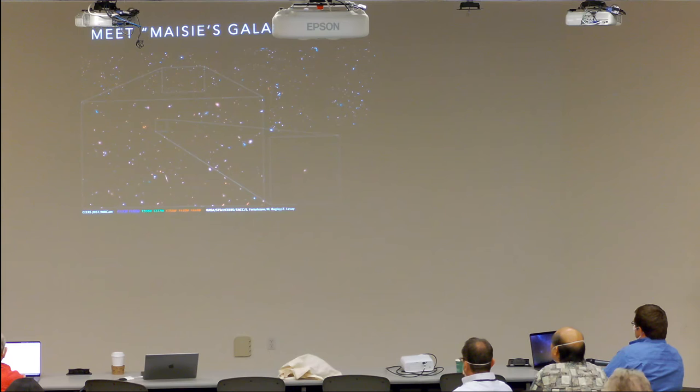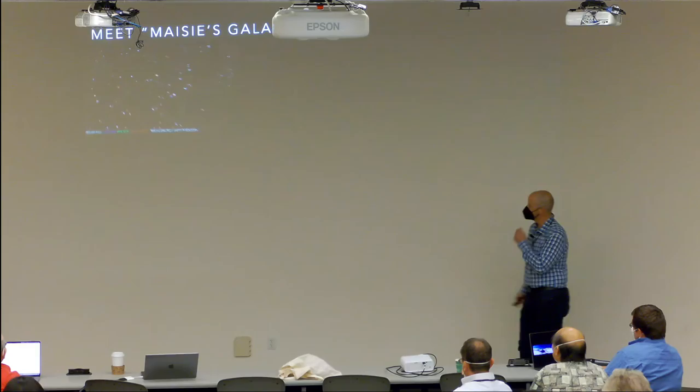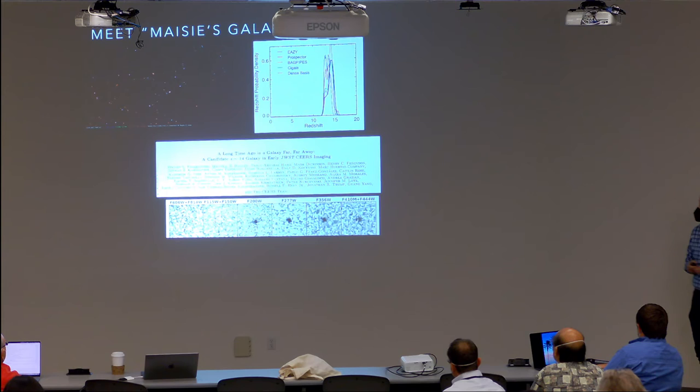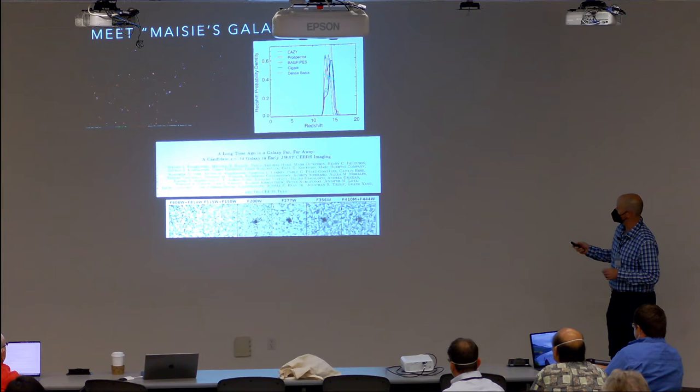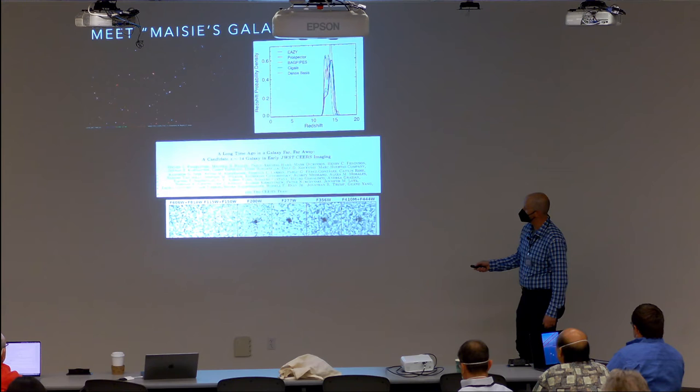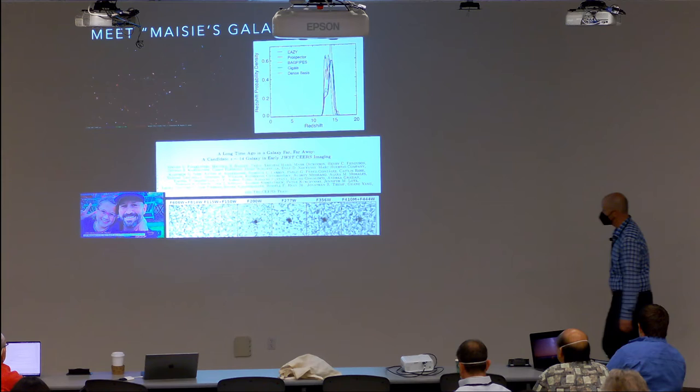We eventually became convinced the source was real and wouldn't turn into a brown dwarf or low-redshift galaxy with better data reduction, so we decided to write up a paper. The photometric redshift distribution — run with EAzY (purple line) and independently by several team members including Karthik — broadly agreed it was at redshift 12 or greater, with an average peak at 13–14. We submitted the paper to arXiv a few weeks ago.